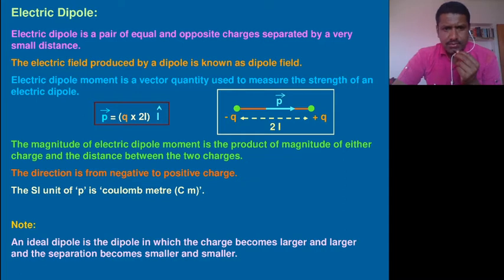The SI unit of P—P is nothing but the dipole moment. Here we have seen P bar is equal to Q into twice L. L is nothing but length. The SI unit of P is coulomb meter, here is C for coulomb, m for meter.